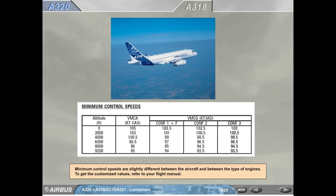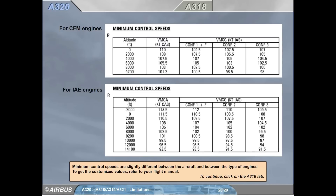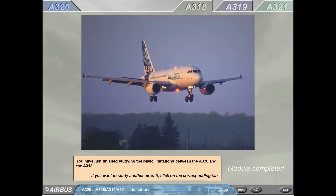A318. Minimum control speed. Minimum control speeds are slightly different between the aircraft and between the type of engines. To get the customized values, refer to your flight manual.